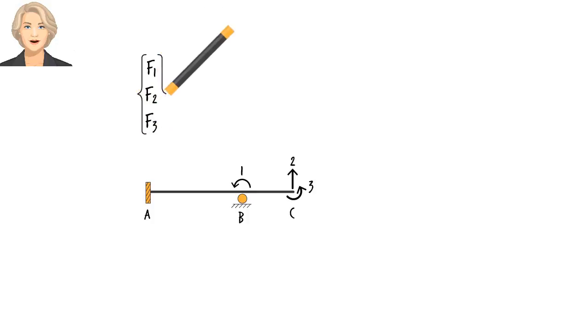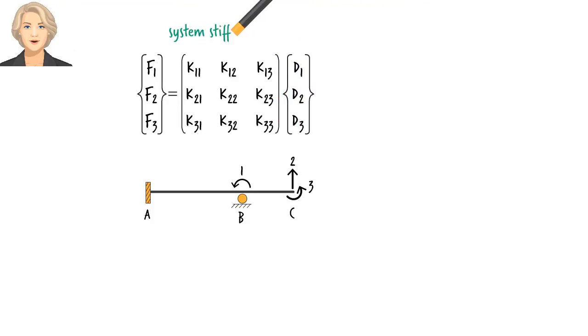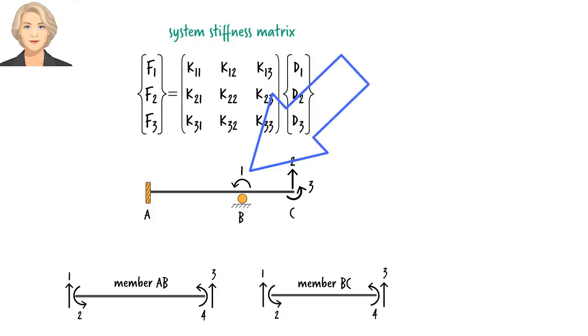The relationship between the system force vector and displacement vector can be defined using a system stiffness matrix. For our beam, this matrix has to be 3 by 3 since there are 9 force displacement pairs here. We determine the elements of this matrix by adding the related elements from the member stiffness matrices. Let's examine the correlation between the degrees of freedom of the system and those of the members. D1 of the system is the same as D4 of AB and D2 of BC. D2 of the system is the same as D3 of BC. And D3 of the system is the same as D4 of BC. The same correlation holds true between system and member forces.